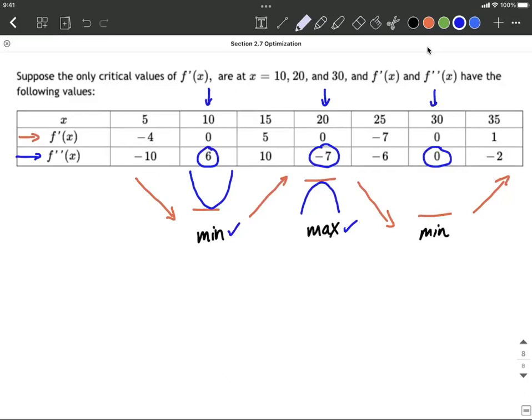But what happens if it's zero? Well, if it's zero, it doesn't tell you anything about the graph. It's inconclusive. So right here at x=30, it doesn't tell us anything about concavity, but based on the first derivative test, it makes sense that we do have a minimum at that critical value.